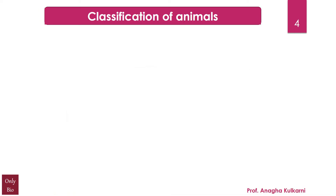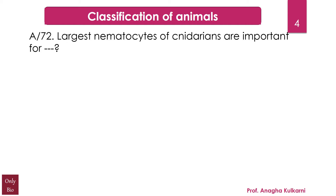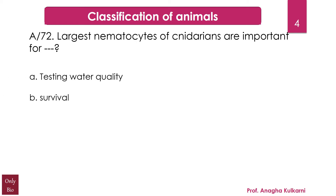The next question relates with the chapter classification of animals. The question is: largest nematocytes of cnidarians are important for dash. Options are A. testing the water quality, B. survival, C. feeding, D. both B and C. The correct answer is both B and C.